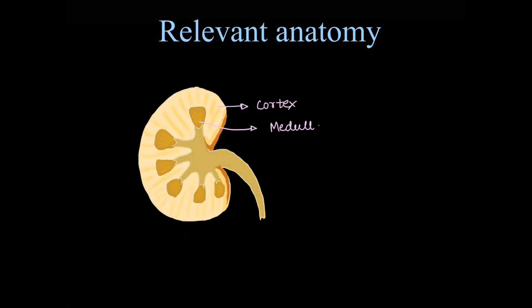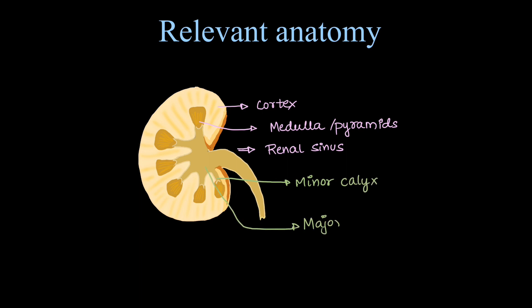Coming to gross anatomy of kidney, this is the cross section where we can see the cortex and the triangular medulla or pyramids, and then there is renal sinus from where ureter exits and vessels enter. We have minor calyx, major calyx and this is the renal pelvis of the collecting system.